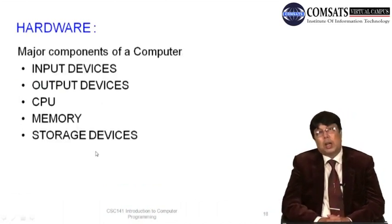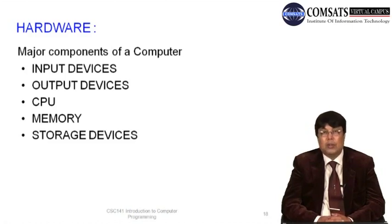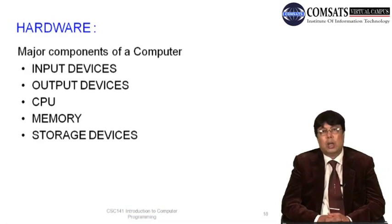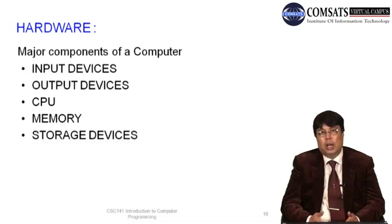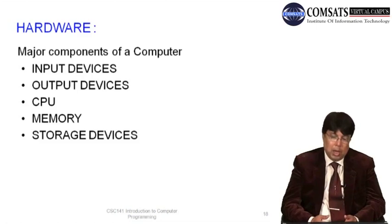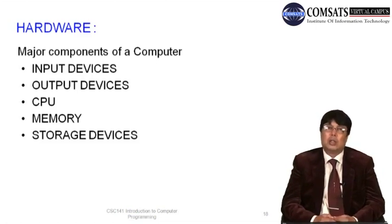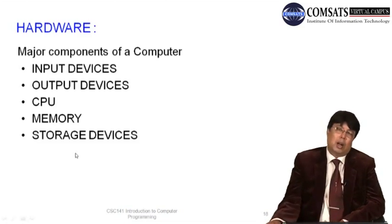Hardware may be categorized into five components: input devices, output devices, CPU, memory, and storage devices. Some books categorize into three: peripheral devices (including input, output, and storage devices), CPU, and memory. These five physical components constitute the hardware of the computer.